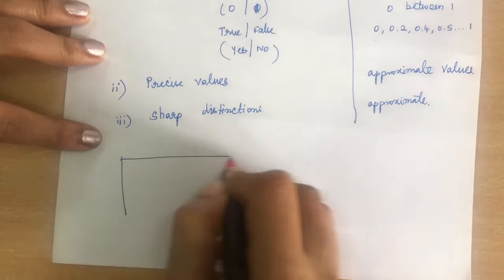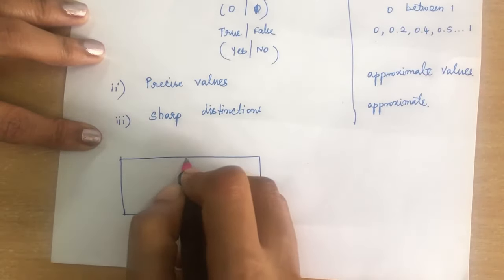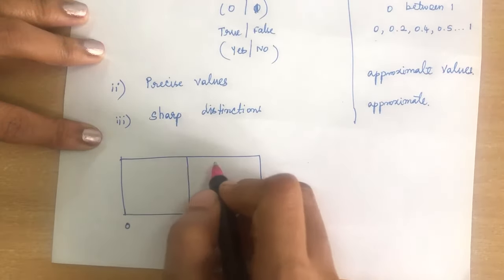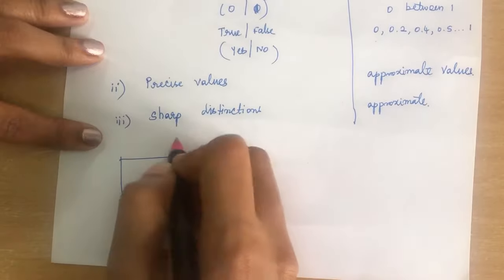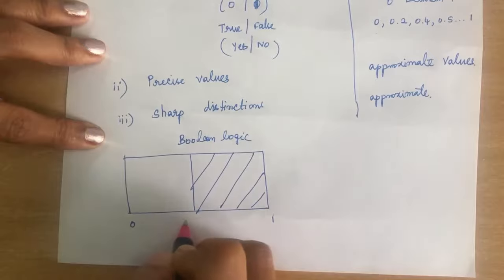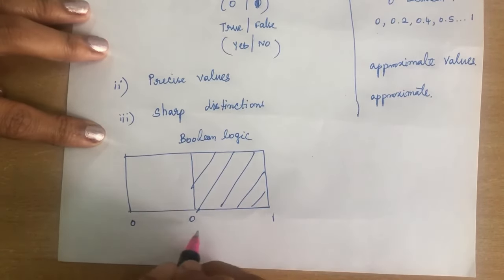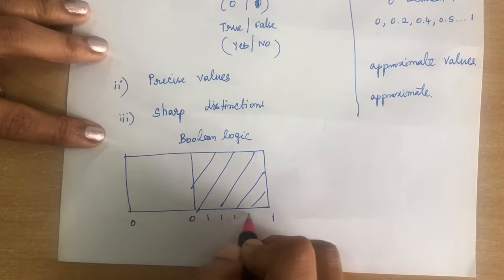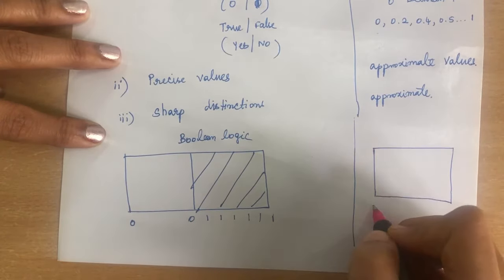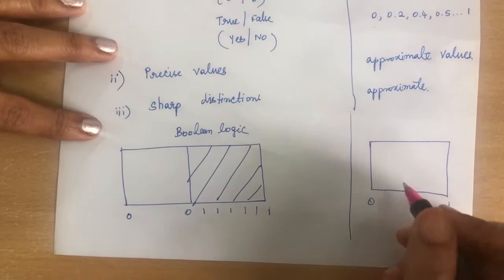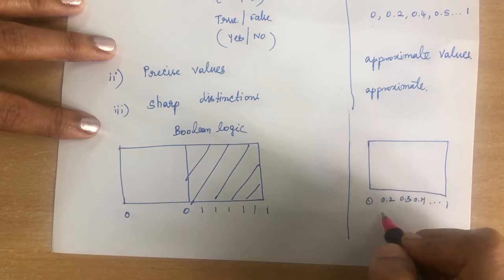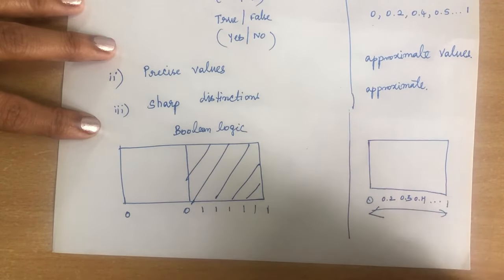Looking at the diagram: in Boolean logic, you have only values 0 or 1 — either one or the other. In fuzzy logic, it can take any value between 0 and 1, such as 0.2, 0.3, 0.4 — any value from 0 to 1. That is fuzzy logic.